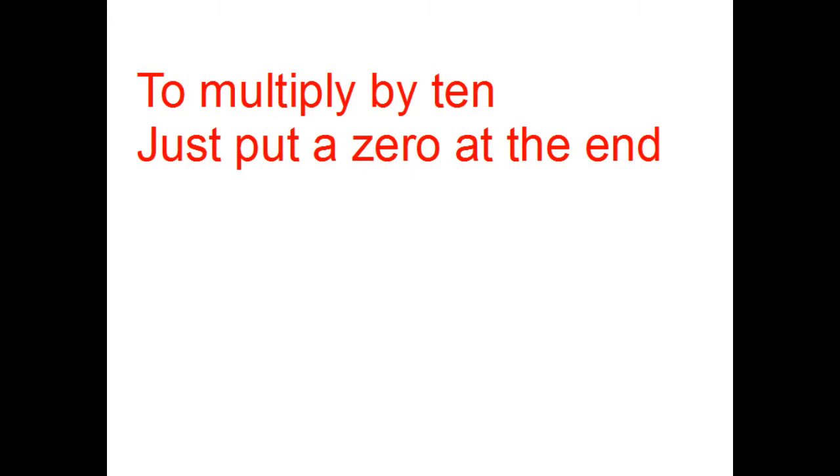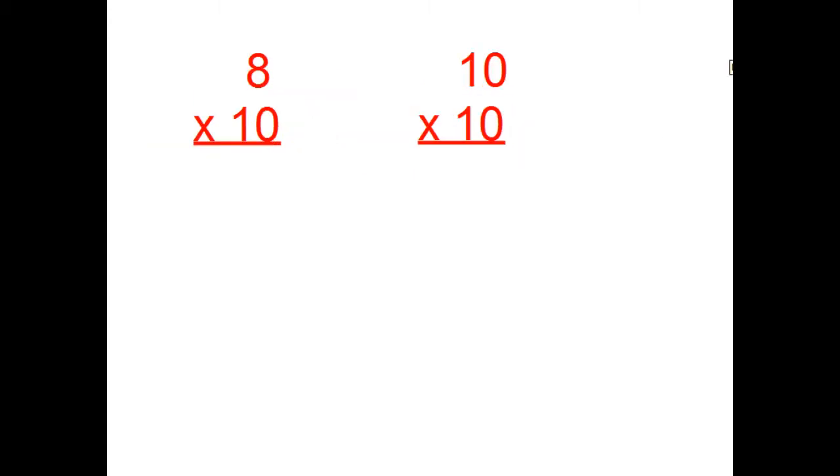To multiply by 10 just put a zero at the end. You've probably seen these problems before. 8 times 10 and 10 times 10.